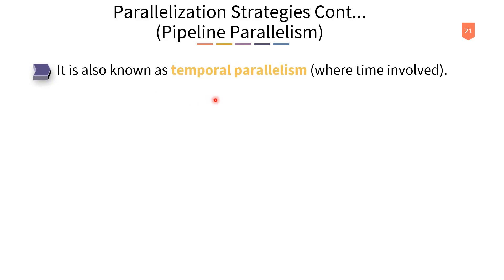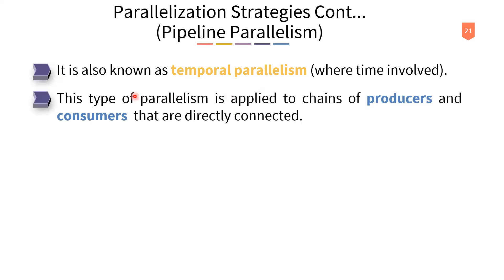The third type is pipeline parallelism, also known as temporal parallelism, where time is involved. This type is applied to chains of producers and consumers — similar to the producer-consumer problem in operating systems. If the producer produces some items, the consumer will consume them. This type of parallelism applies to directly connected chains of producers and consumers.